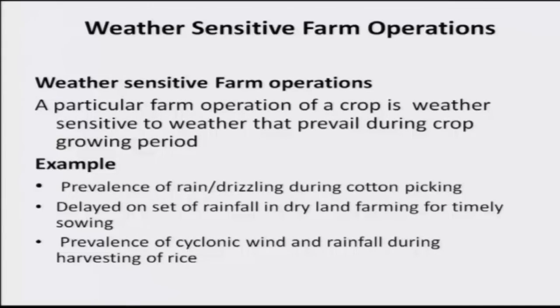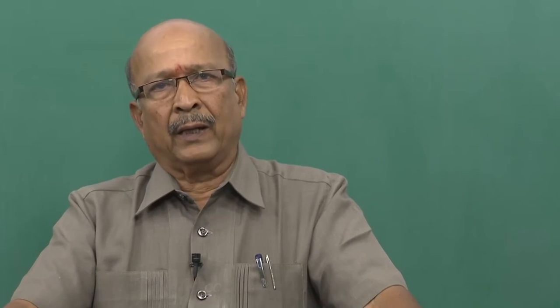These are all weather sensitive farm operations. The prevalence of cyclonic wind and rainfall during harvesting of rice is very important — in India, about 43 million hectares are under rice, and if a cyclone occurs we will lose production greatly, creating a crippling problem for food availability and food demand. Crop production risk must be considered before developing agro-advisories. Weather sensitive crops, weather sensitive stages, and weather sensitive farm operations must all be considered meticulously for developing 100% effective agro-advisories.